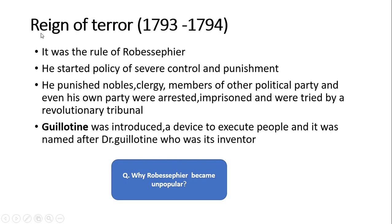The Reign of Terror lasted from 1793 to 1794 — the rule of Maximilien Robespierre. He started policies of severe control and punishment. He punished nobles, clergy, members of other political parties, and even his own party members, who were arrested, imprisoned, and tried by revolutionary tribunals. He introduced the guillotine — a device to execute people named after its inventor, Dr. Guillotin.